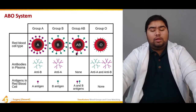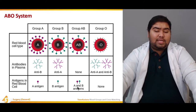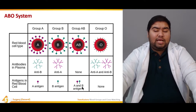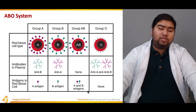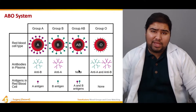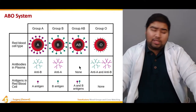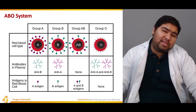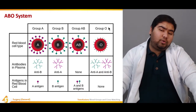This is blood group AB. It has both antigens — antigen A is shown in a circle in pink, and antigen B is shown in a diamond shape in blue. It has neither of the antibodies but both of the antigens, so this is a universal recipient because there are no antibodies in their blood and they can practically receive any type of blood.